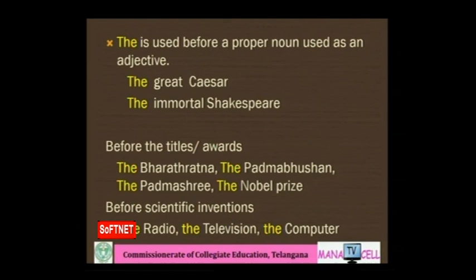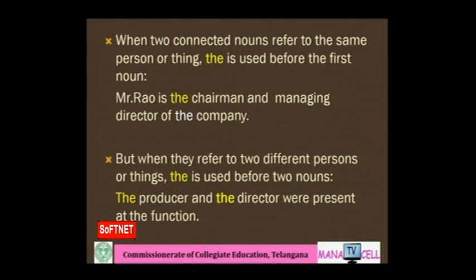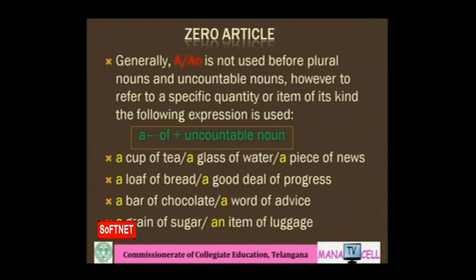'The' is used before scientific inventions: the radio, the television, the computer. When two connected nouns refer to the same person or thing, 'the' is used before only the first noun: 'Mr. Rao is the chairman and managing director of the company' — one 'the' is enough. But when they refer to two different persons, 'the' is used before both nouns: 'The producer and the director were presented at the function.'